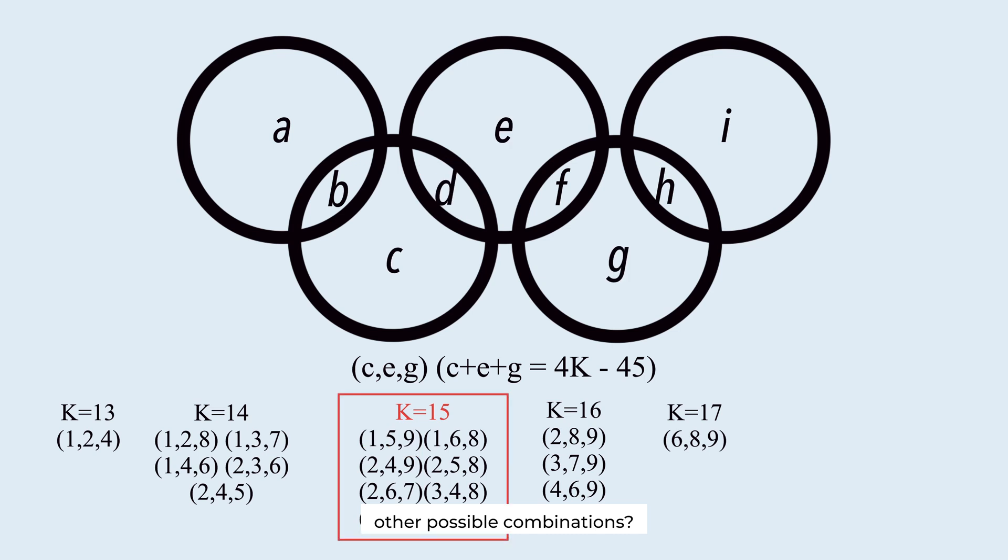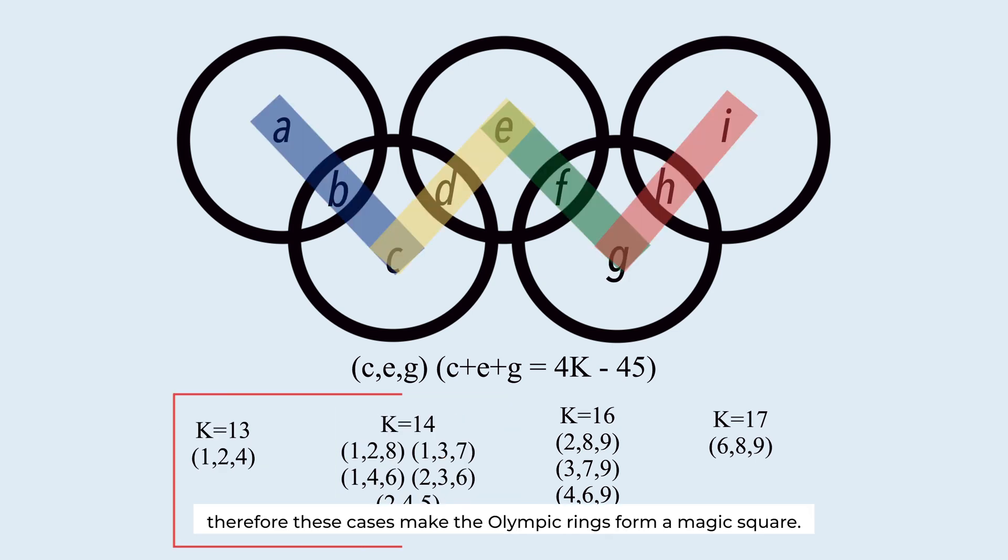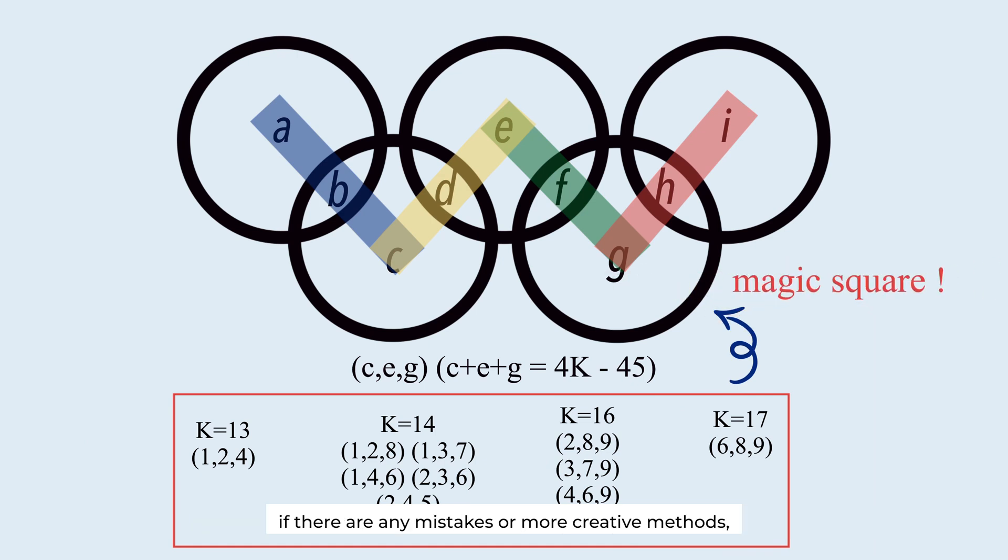Are the possible combinations the same? Therefore, these cases make the Olympic rings form a magic square. If there are any mistakes or more creative methods, please share it in the comments.